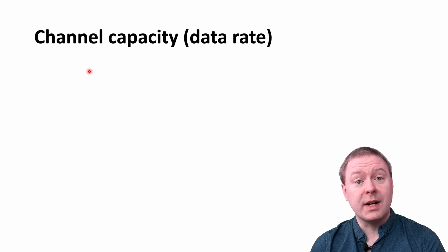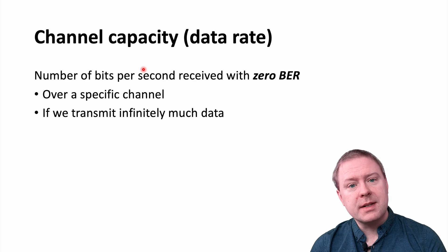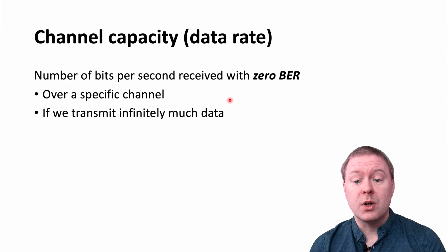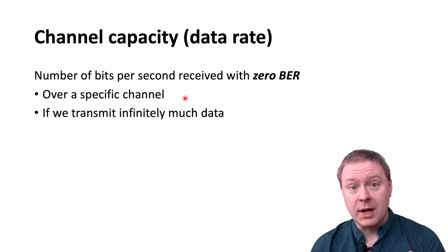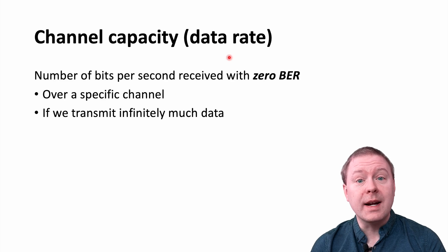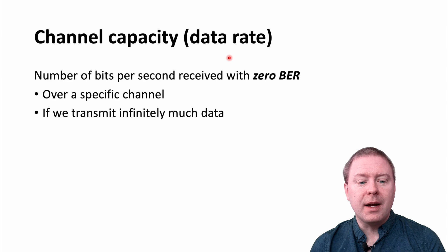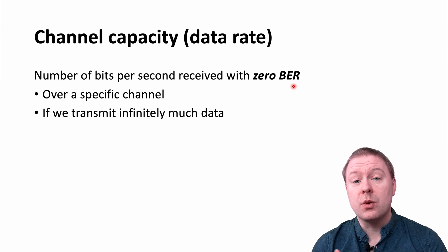Let us now take a closer look at the channel capacity, also known as a data rate. So this is the number of bits that we can transfer per second without any errors. So it's 0 BER. We can only compute this for a particular channel, because the channel condition determines at what speed or rate that we can transmit bits without error. And it's defined when we are transmitting infinitely much data. So the 0 errors is occurring when the number of data bits goes towards infinity.